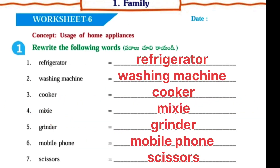Worksheet No. 6 — First one, rewrite the following words. Here some words are there. You have to write as they are.